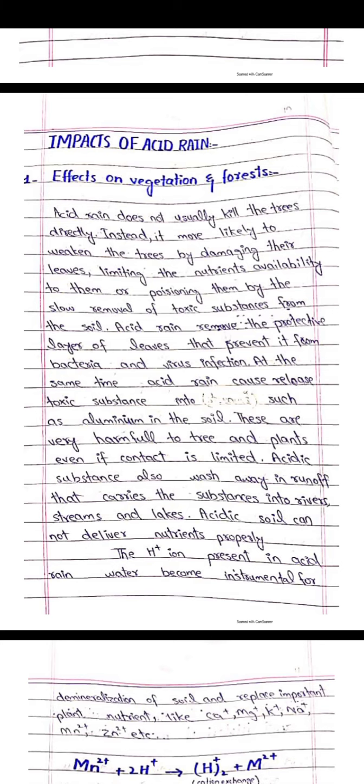Instead, it is more likely to weaken trees by damaging their leaves, limiting their nutrients' availability, and by the slow removal of toxic substances from the soil. Acid rain weakens trees through damage to their leaves and by poisoning their nutrient supply.